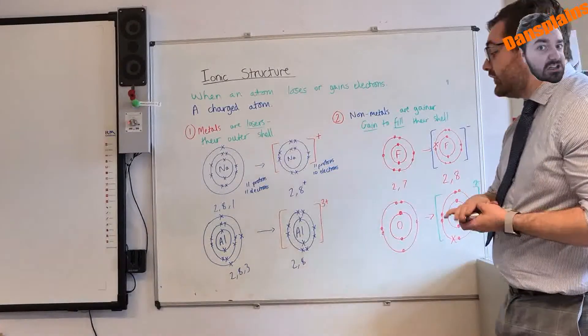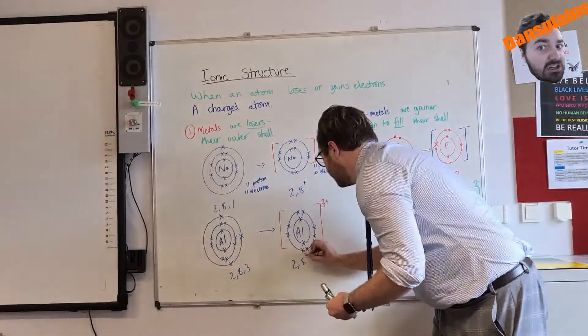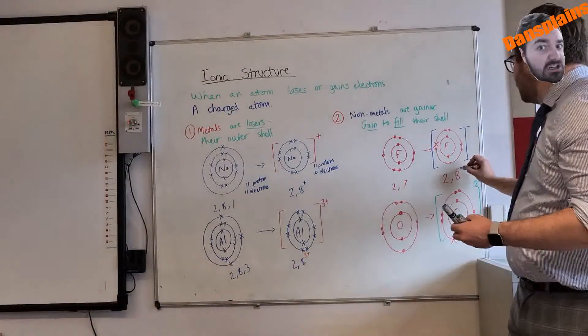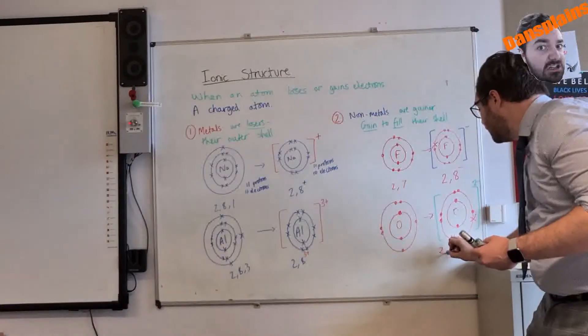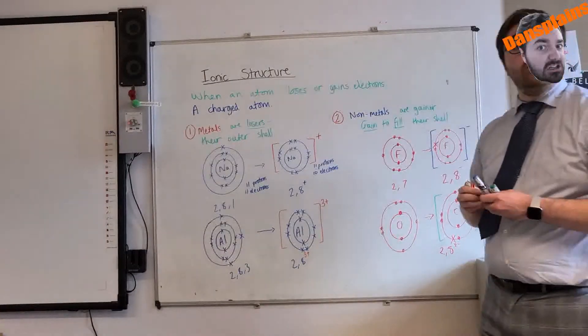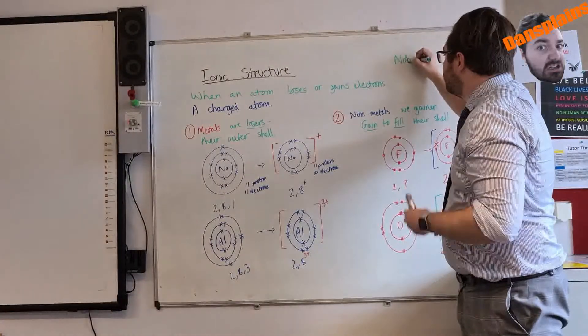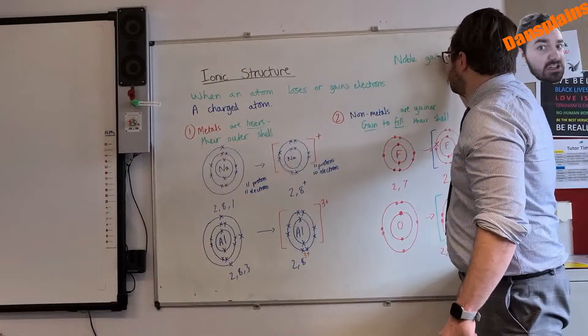Now I will notice that I have 2, 8, 3 plus; I have 2, 8, minus; I have 2, 8, 2 minus. These are all what we call noble gas structures.